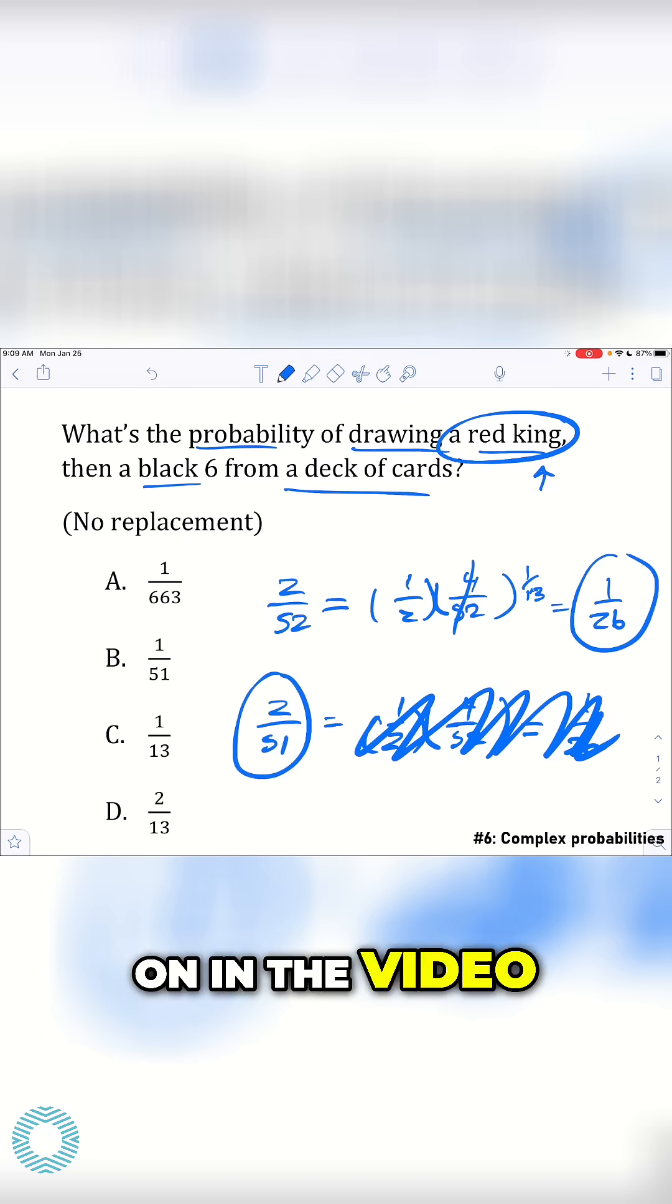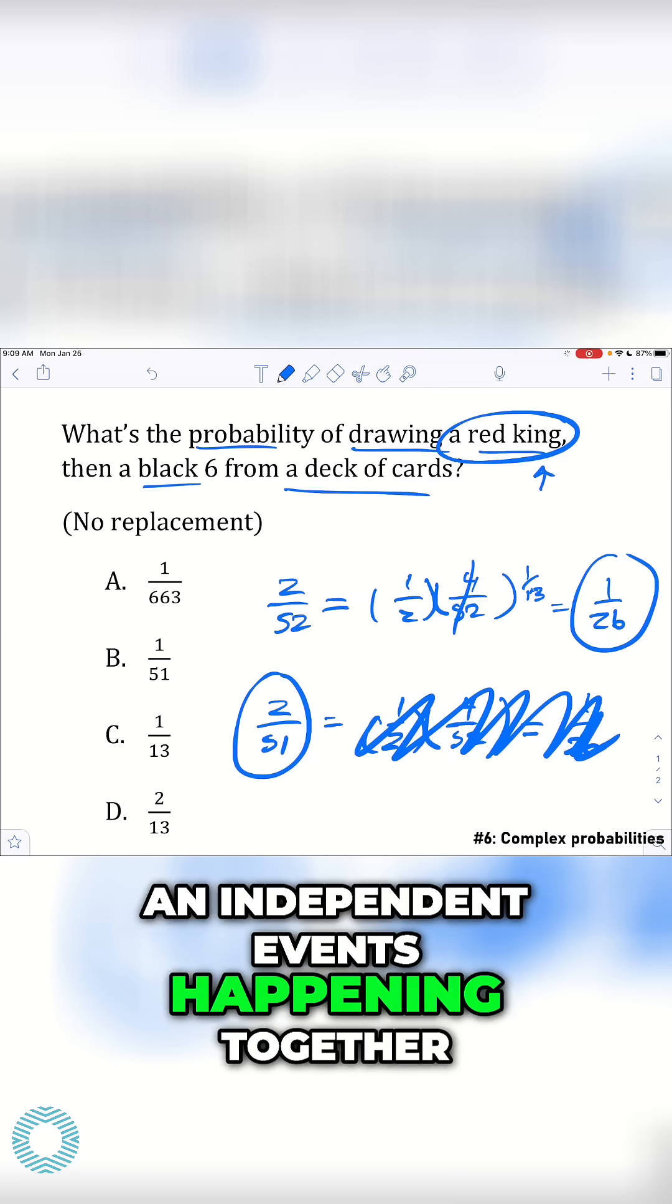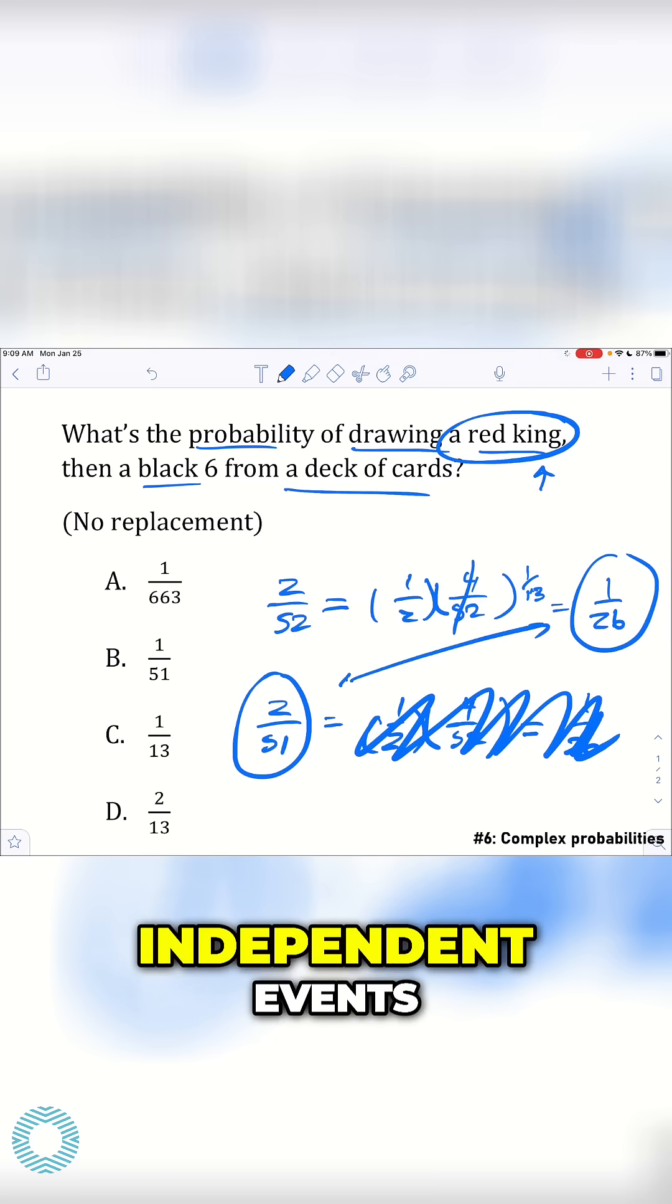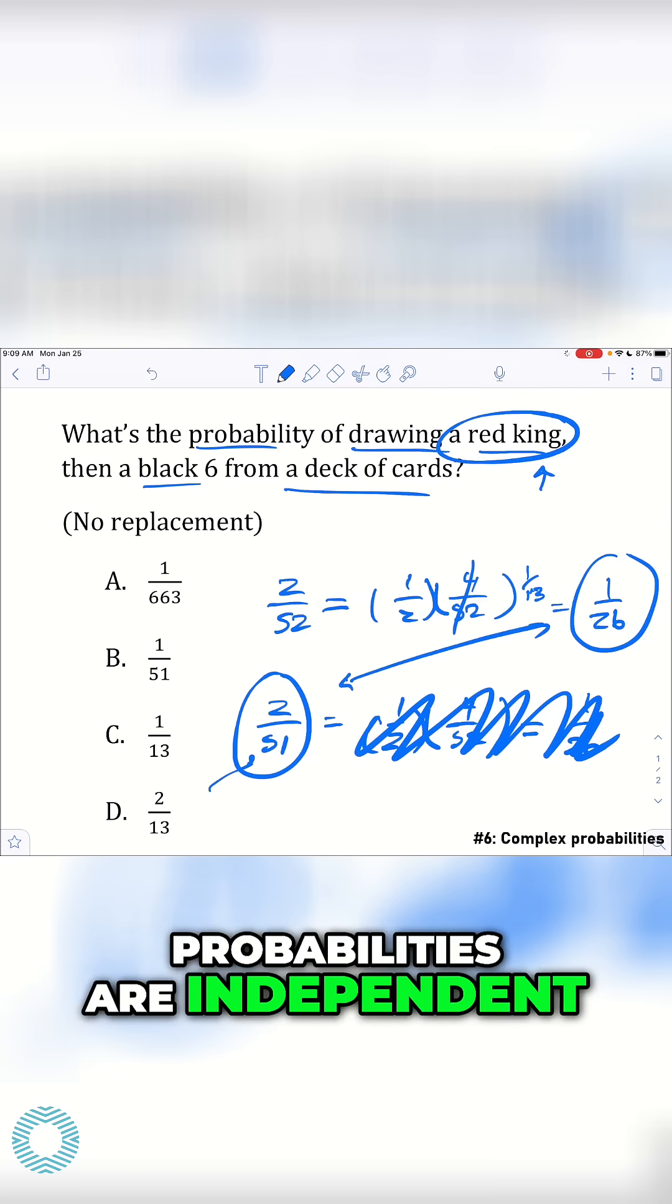If you remember early on in the video, I went over how you deal with if you want to find the probability of n independent events happening together, these also count as independent events as long as their probabilities are independent.